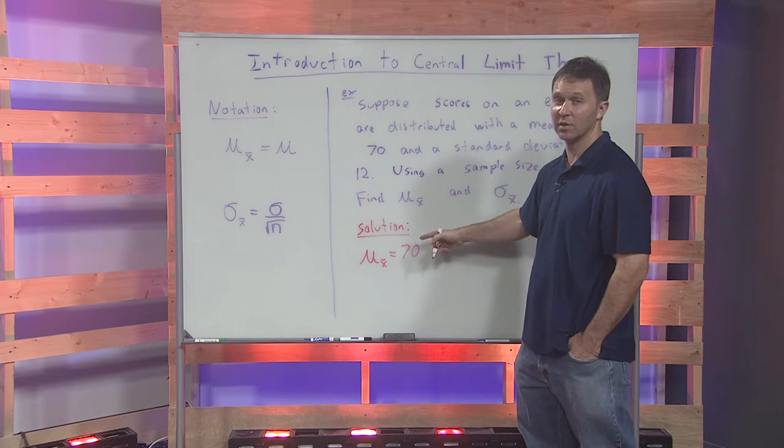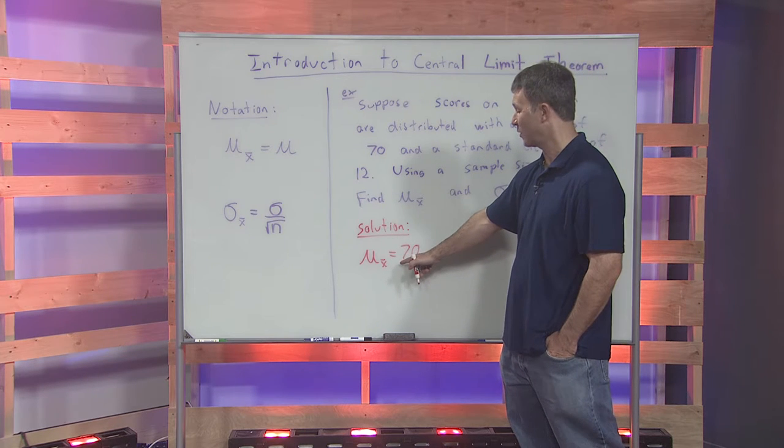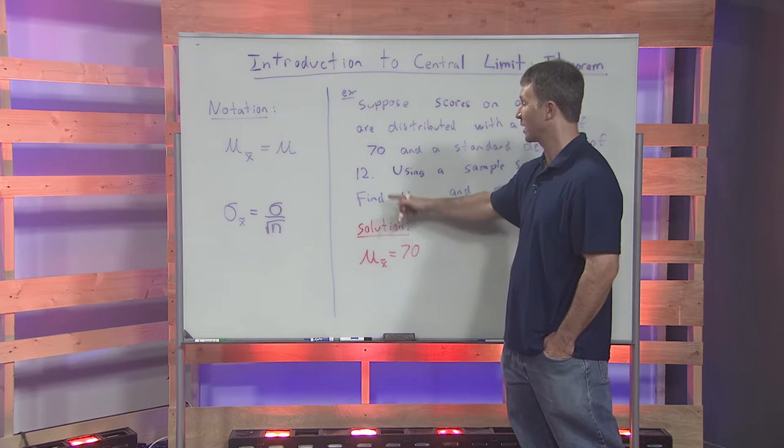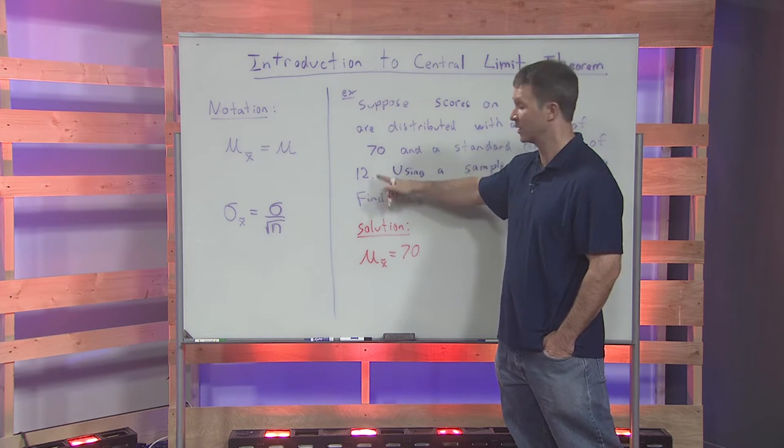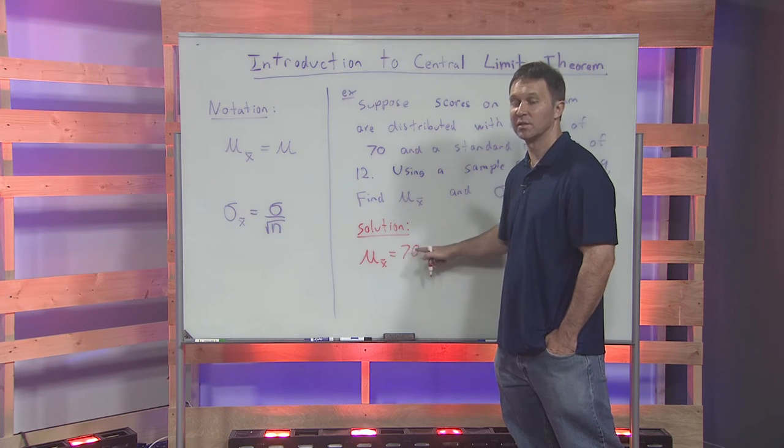The mean of the means is equal to the original mean. So there was no work involved in this. All it was was recognizing that the original mean was 70. So the mean of the means is 70.